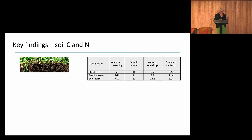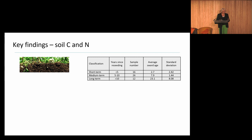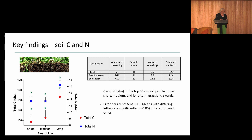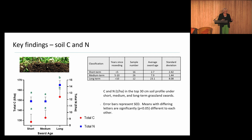First, key findings in terms of soil carbon and nitrogen. For the grassland fields, we categorised them according to the age of the sward: short-term, less than five years; medium-term, five to ten; and long-term, greater than ten. The sample size is about 54. This shows total carbon and total nitrogen in the top 30 centimetres of the soil profile under the different sward ages. Between short and medium term there isn't a huge change in soil carbon and nitrogen, but there is a significant uplift once swards get longer than 10 years.